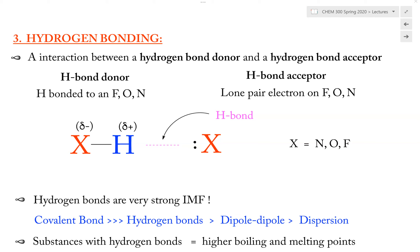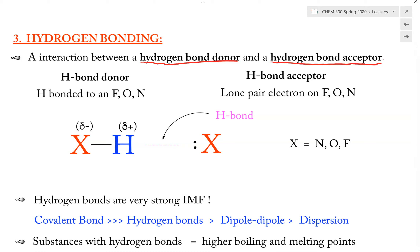In this lecture video, I'll be discussing Hydrogen Bonding, which is another type of intermolecular force. A Hydrogen Bond is basically an interaction between a Hydrogen Bond donor and a Hydrogen Bond acceptor. When this Hydrogen Bond acceptor and donor interact with each other, that's what makes up the Hydrogen Bond.